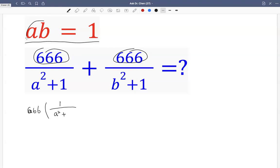But AB is 1, right? Let's just substitute 1 into AB. Then the second one, we have B squared. Also let's use AB to substitute this one.